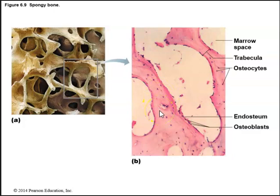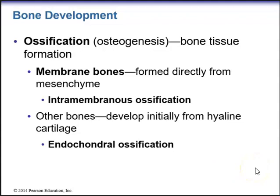Bone development occurs through ossification, also known as osteogenesis. Membrane bones form directly from mesenchyme through intramembranous ossification — all skull bones except a few at the base of the skull, plus the clavicles, form this way. Other bones develop from a hyaline cartilage model through endochondral ossification.